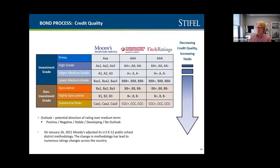As we get into the bond process, we have marketing, pricing, and closing. The biggest component of marketing is the credit rating. This table shows the breakdown of ratings — Triple-A is the highest. Districts like Upper Arlington, Orange, Great Oaks in the Cincinnati area, and Dublin have Triple-A ratings from Standard & Poor's. These are really highly rated, financially secure districts — typically suburban districts around Columbus, Cleveland, or Cincinnati.